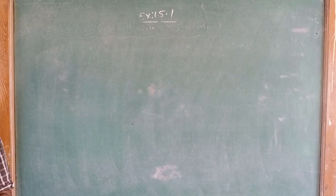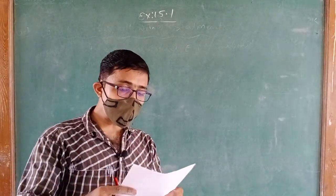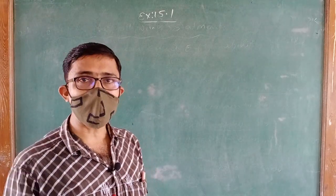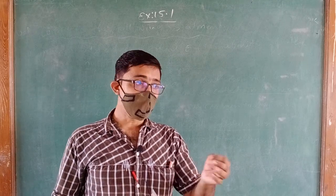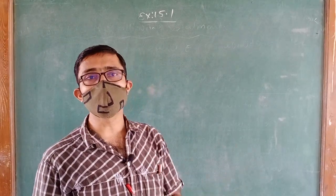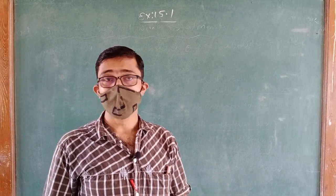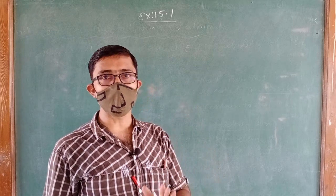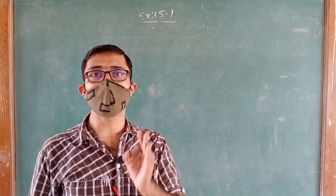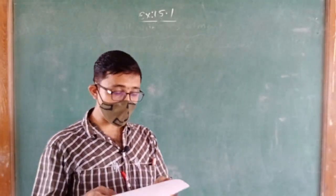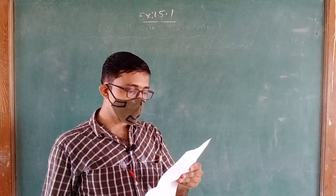Next question asks: which of the following experiments have equally likely outcomes? As I explained in the last lecture, when we throw a dice the outcomes 1, 2, 3, 4, 5, 6 are equally likely. When we toss a coin, head or tail are equally likely outcomes. Now we check four conditions.